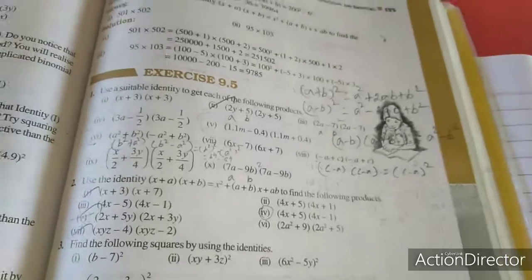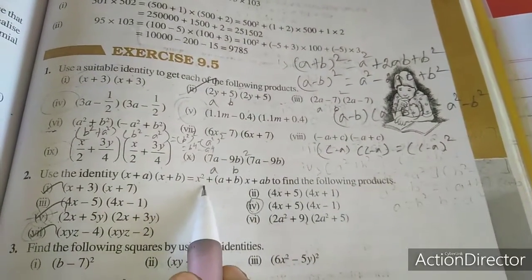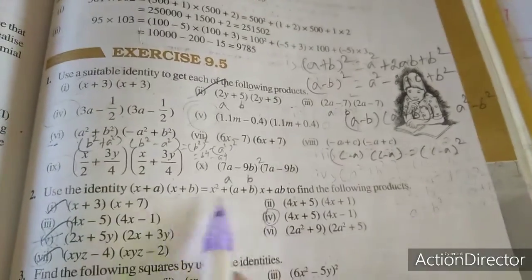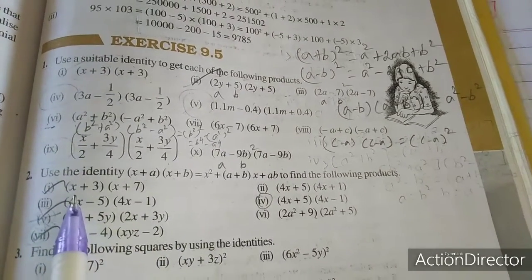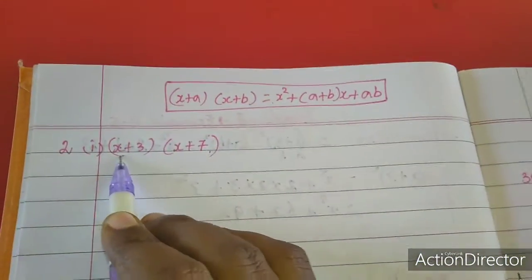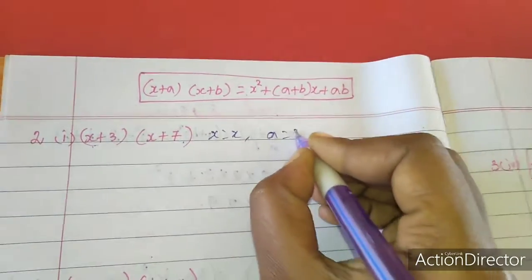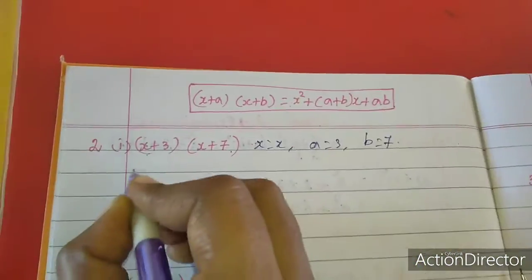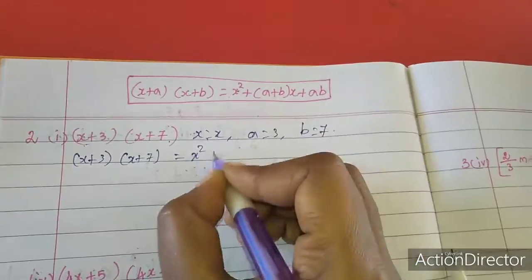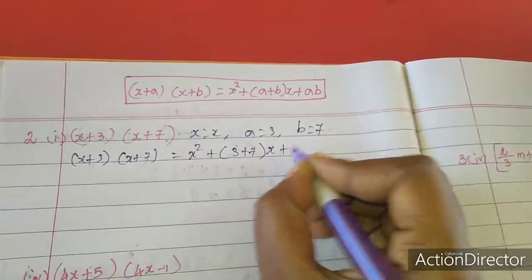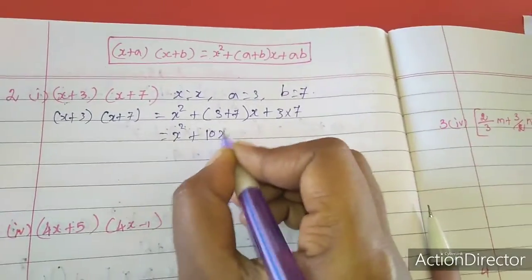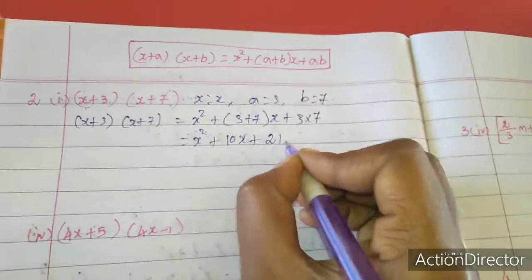Now we move to the second question: use the identity (x + a)(x + b) = x² + (a + b)x + ab to find the following products. Applying this formula to the first sum gives x² + 10x + 377 ... wait — the answer for the first sum of this section comes out as x² + 10x + 377 ... this is the answer for the first sum.